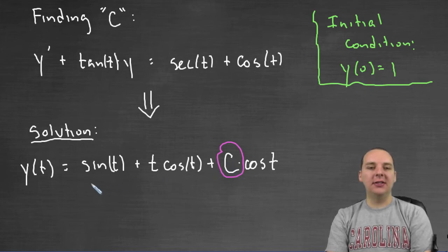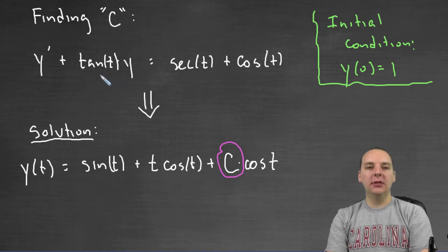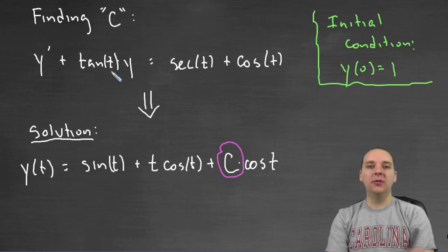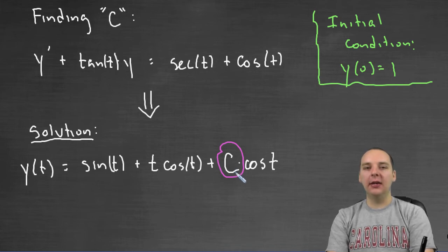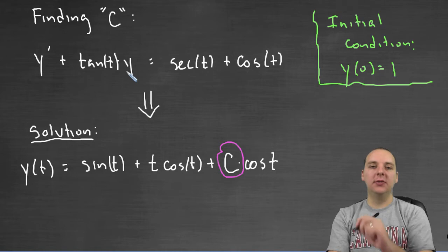C is a generic constant, and this solution would be the solution for this differential equation for any constant. The constant could be 5 or 10 or negative 7, and all of these would be solutions of this differential equation.